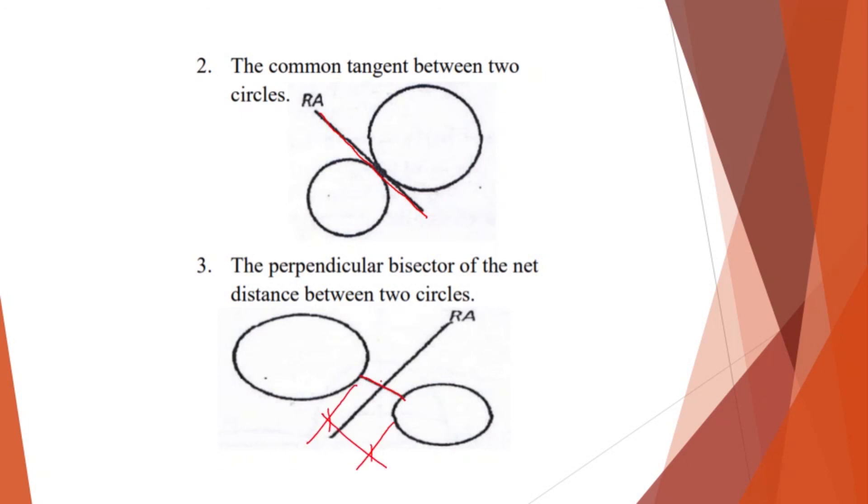So if the line bisects perpendicular with this distance here, with this net distance, then we can consider that as our radical axis. Okay, so we'll stand by sa part two natin for our examples.